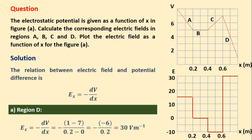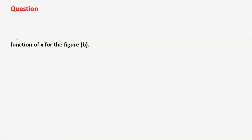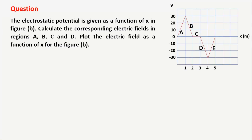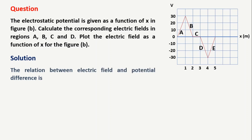Now let us go to a similar problem with a different voltage versus x curve. The electrostatic potential is given as a function of x in figure B. Calculate the corresponding electric field in regions A, B, C, D, and E. Plot the electric field as a function of x for figure B. The relation between electric field and potential difference is E_x equals minus dV by dx.